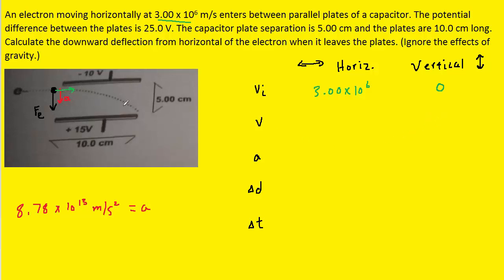As the electron travels between the plates, it covers a horizontal distance of 10 centimeters, which is 0.10 meters. So we plug in 0.10 meters for the horizontal displacement. The downward acceleration acts in the vertical direction, so we plug in 8.78×10¹³ for the vertical acceleration. There is no acceleration in the horizontal direction.